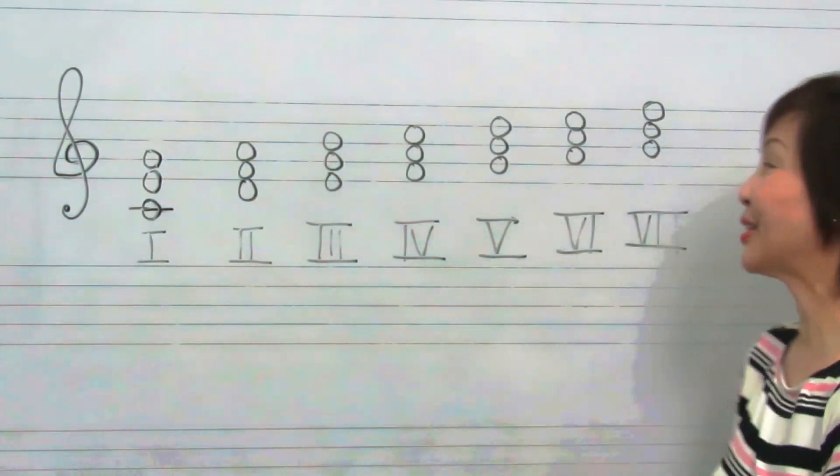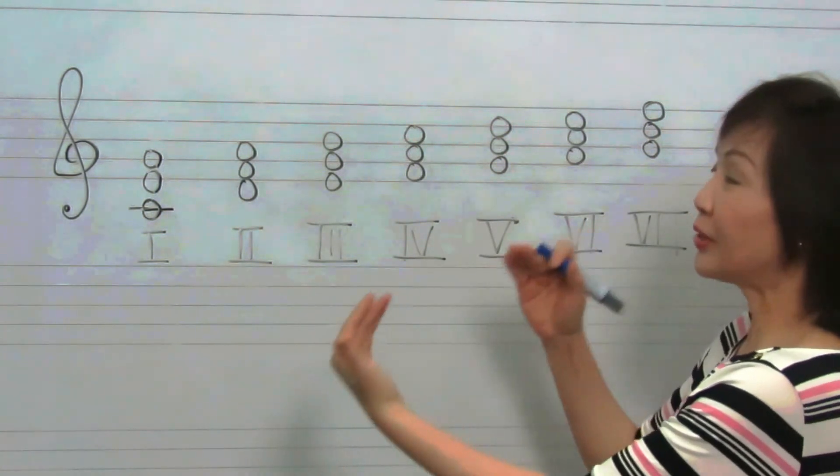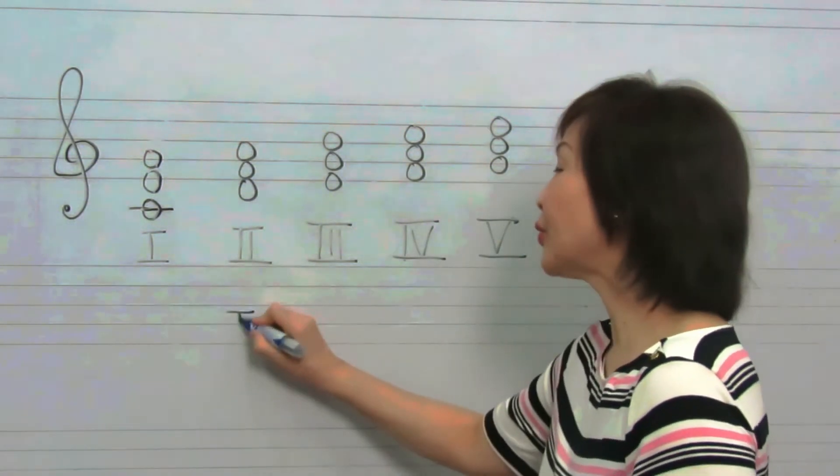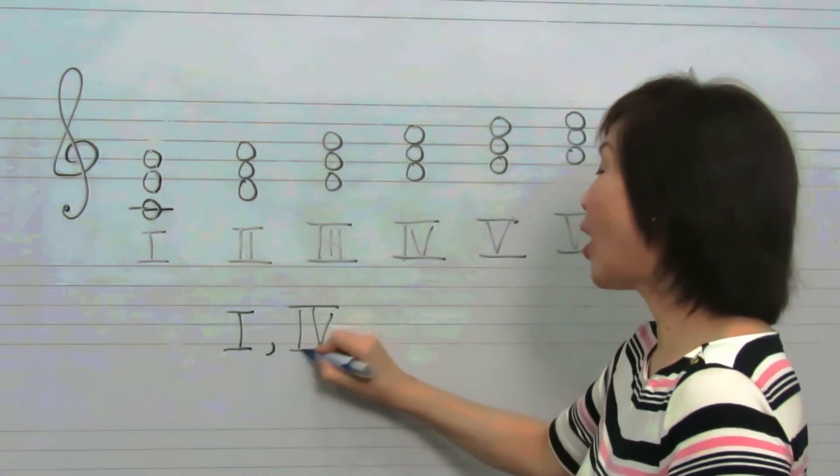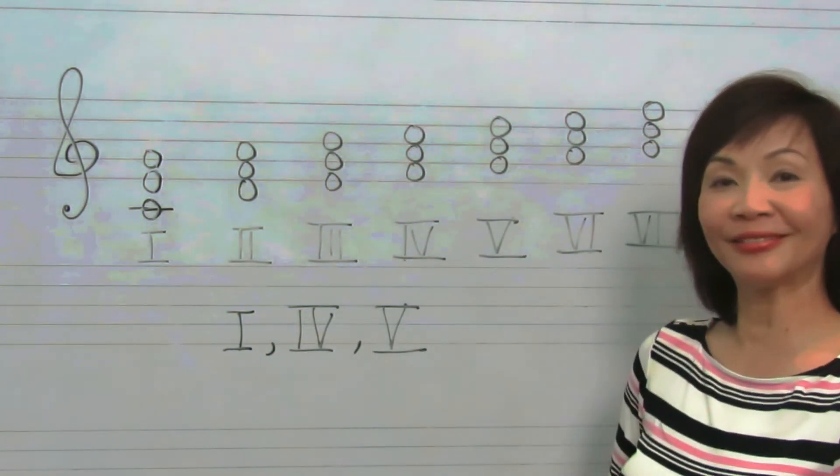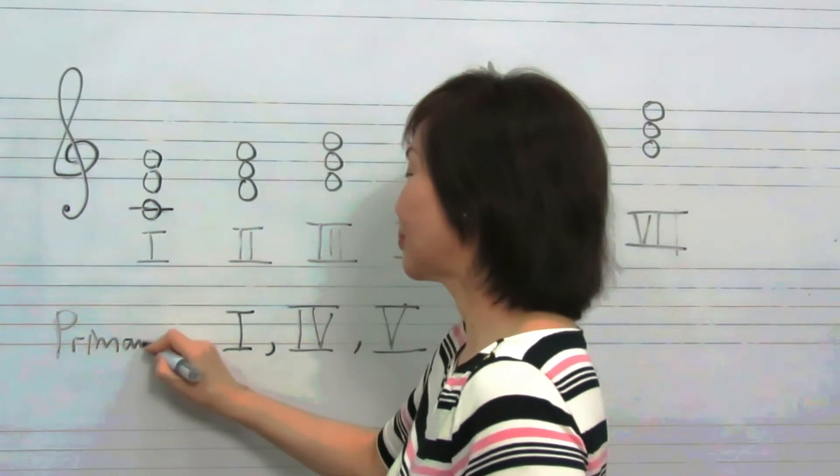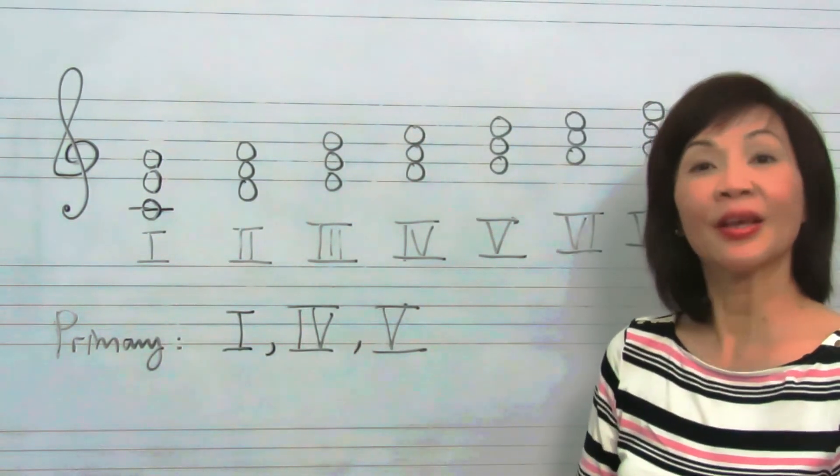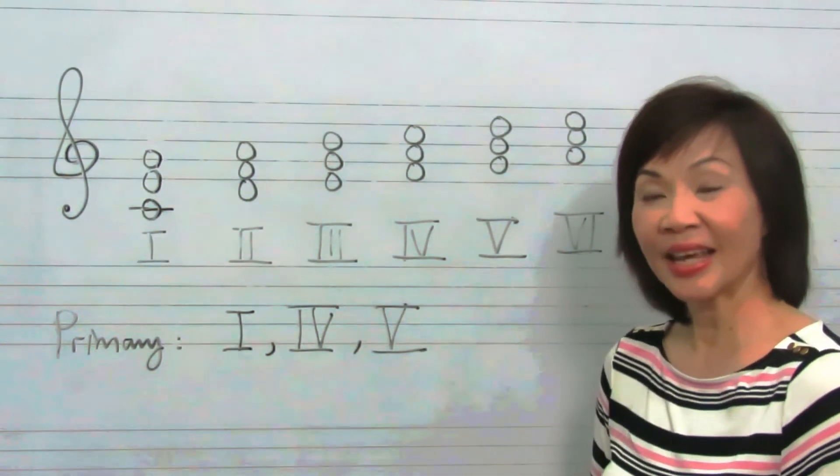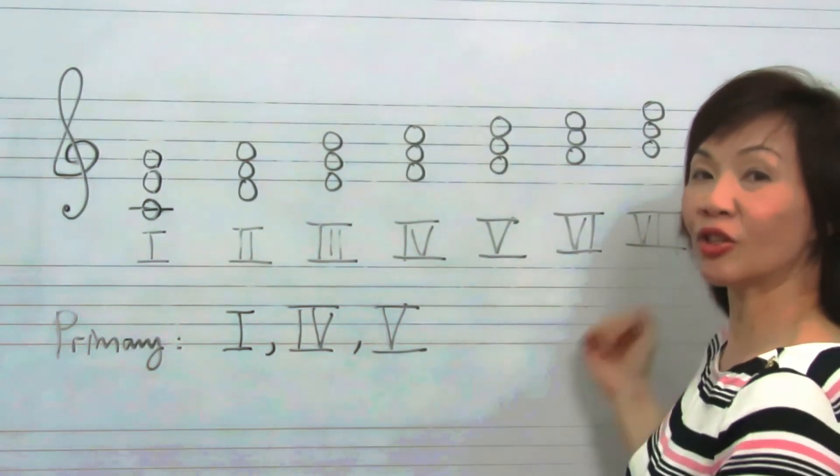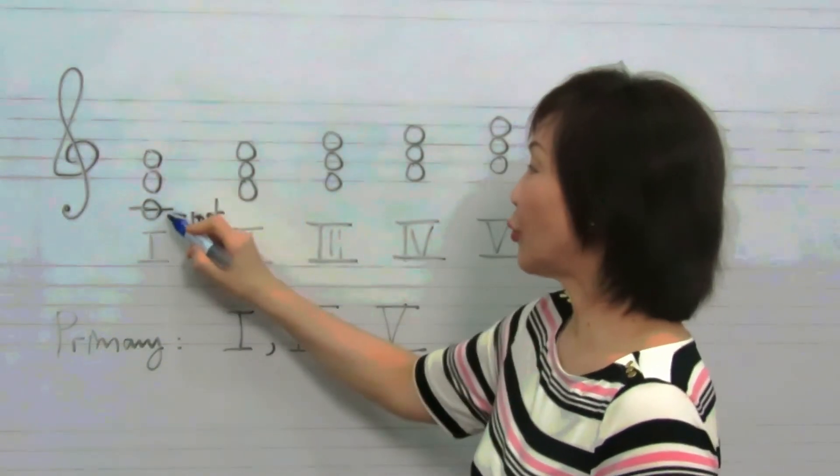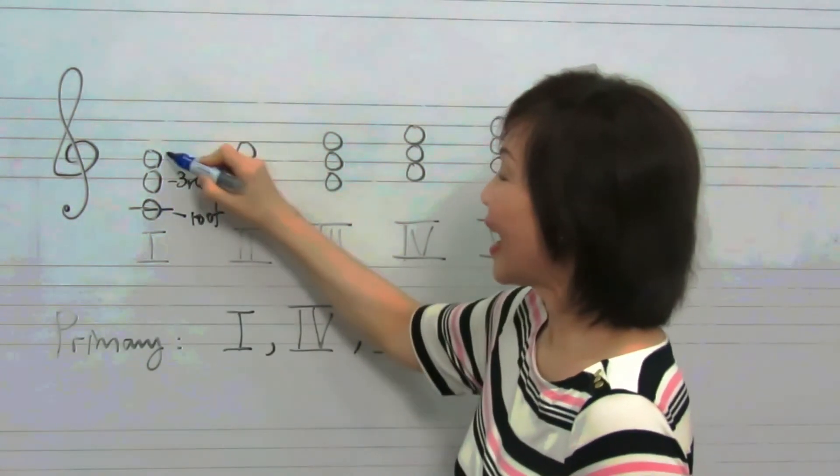Here are the triads of the C major scale. I've written them using basic roman numerals without the qualities for the purpose of explanation. You will notice that in the triads of 1, 4, and 5, these three triads comprise all the notes of the C major scale. Let us call these primary triads. For these triads to become chords, of which you write for keyboard or for four-part voices, soprano, alto, tenor, bass, it is necessary to double one of the notes in all these triads. The lowest note of a triad in root position is called the root, this is called the third, and this is called the fifth.